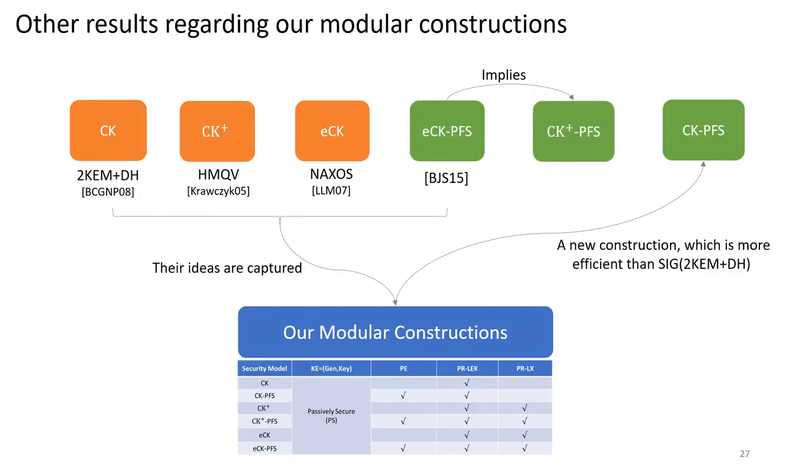Apart from these modular constructions, we also get some other results. First, we use these modular constructions to explain some existing protocols in the CK, CK+, ECK and ECK-PFS models. Then, according to our results, security in the ECK-PFS model implies security in the CK+ PFS model. Thus, we can get some new constructions in the CK+ PFS model. And last, we also give a new construction according to our results, which is more efficient than directly applying a compiler on the protocol secure in the CK model.